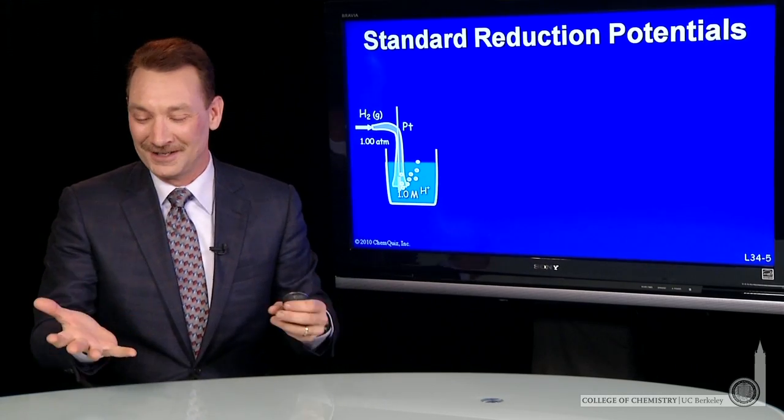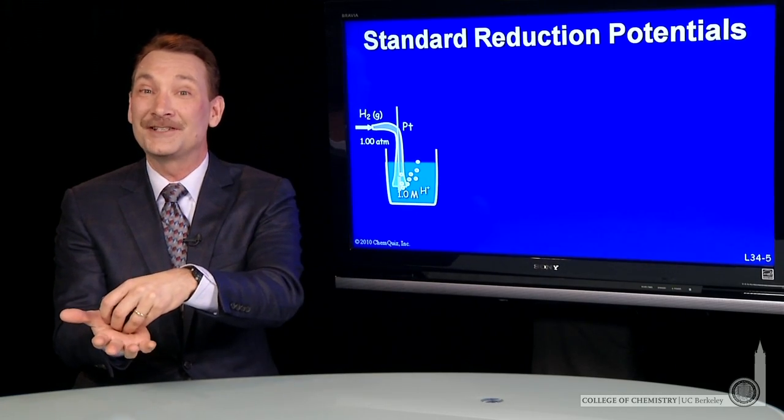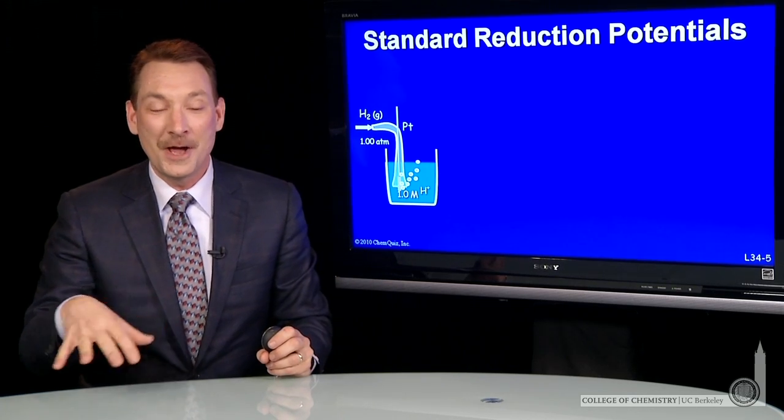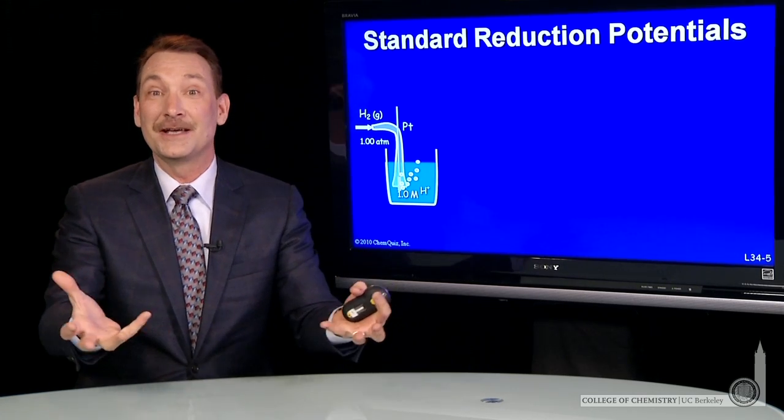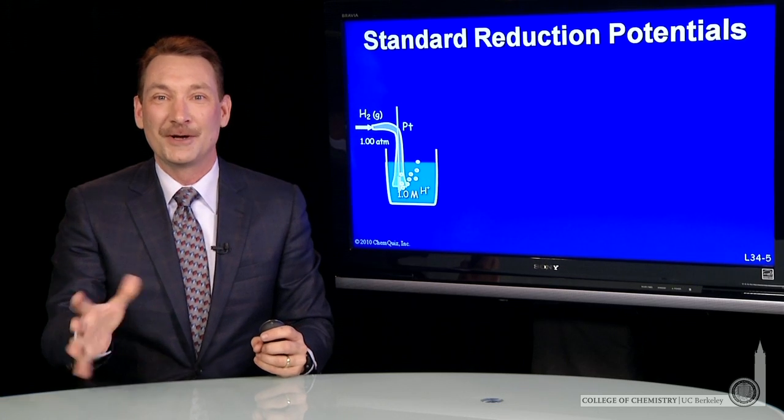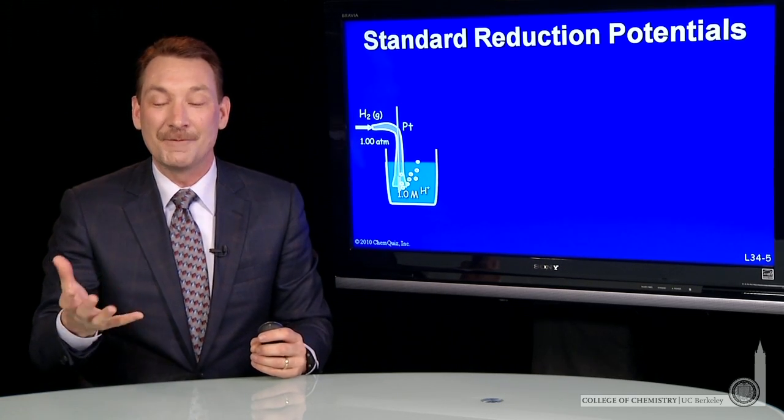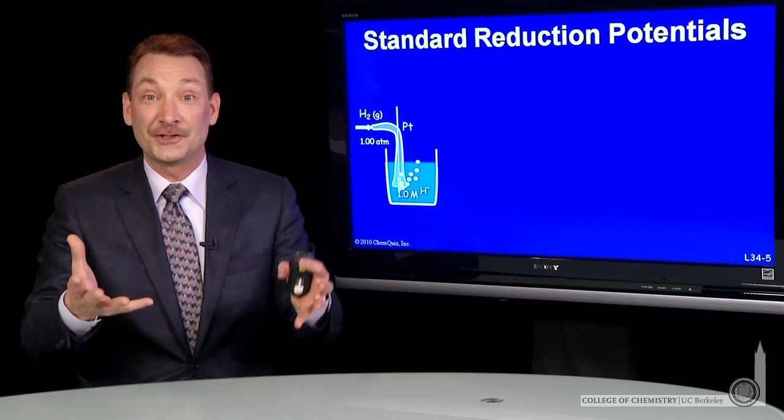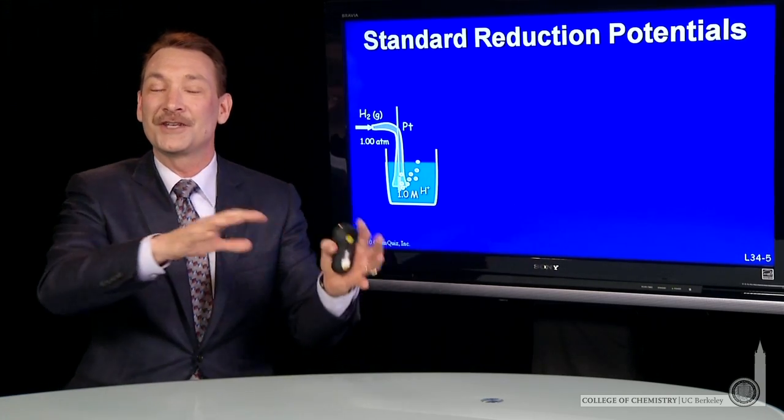In oxidation reduction reactions, electrons flow from reducing agents to oxidizing agents. Those electrons tend to flow even if the reactants and products are in separate beakers. We call the separate beakers half cells, and we can catalog the various half cells with respect to each other in terms of the potential to transfer electrons.